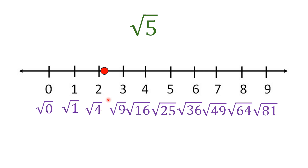As I said, it's just an estimation or approximation because there's no exact value for an irrational number — it's a never-ending, non-repeating number. If it were a repeating number, even if never-ending, it could be written as a fraction, and anything that can be written as a fraction is called a rational number, not an irrational number.